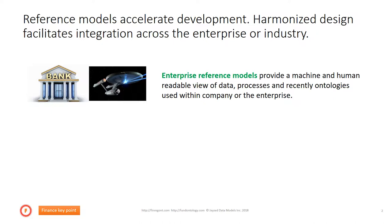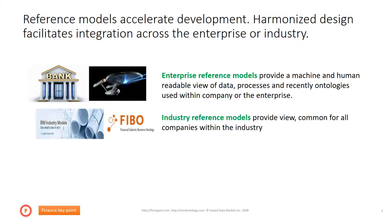An enterprise reference model provides a machine and human readable view of data, processes, and recently ontologies that we use within a company or enterprise. An industry reference model provides the same view but common for all companies within the industry. Well-known examples are the IBM models like the banking data warehouse model.